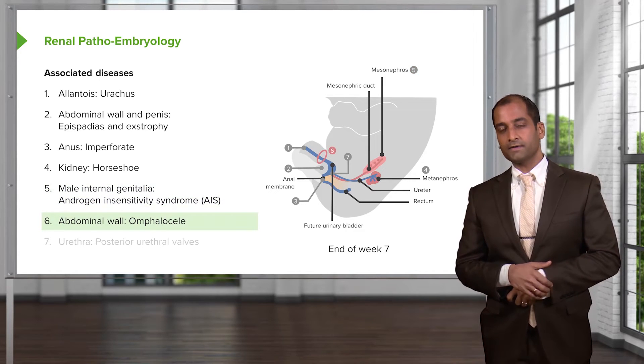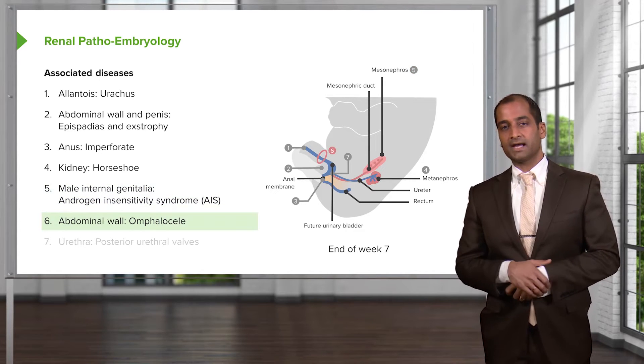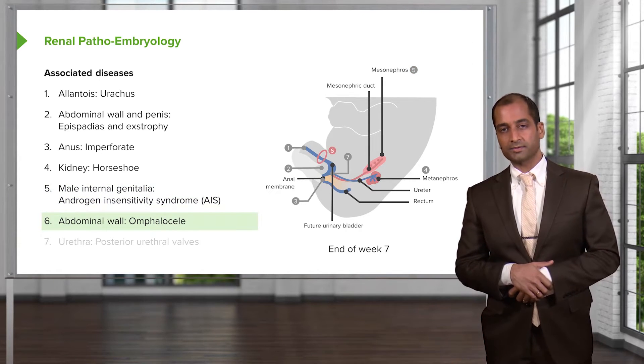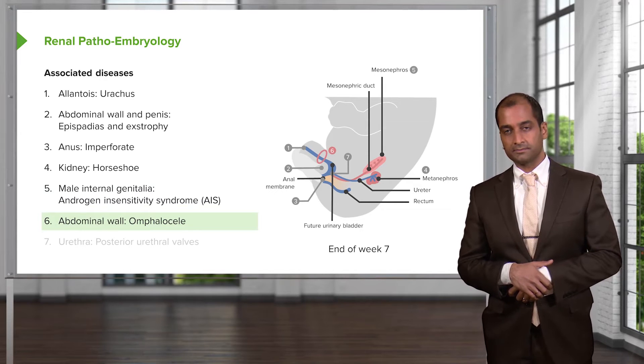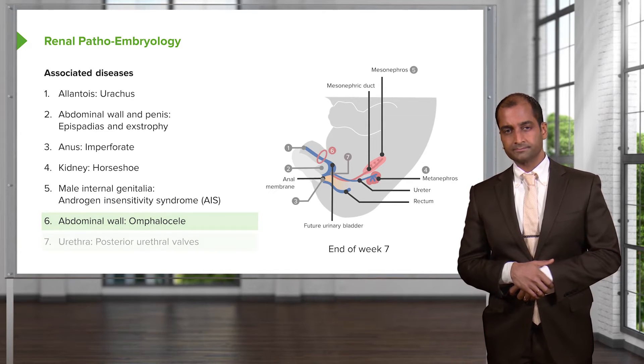Here we have abdominal wall, number six. What if you had an opening of the abdominal wall? It's called omphalocele. Urethra — slow down for one second.